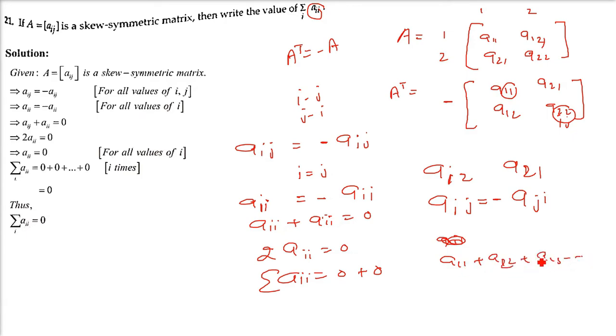When you add all diagonal elements, since each Aii equals zero, the sum Σ Aii equals zero.